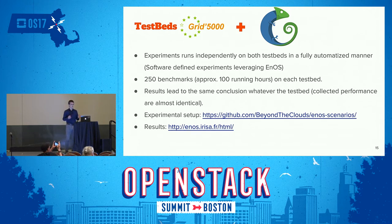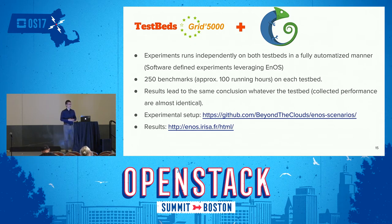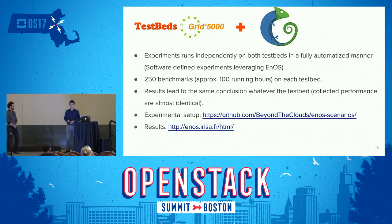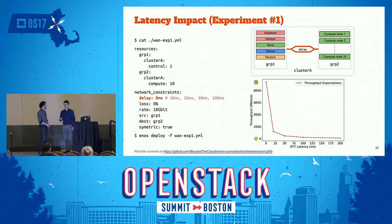Both testbeds — Grid5000 and Chameleon — were used to run the experiments for this presentation. The experiments are fully automated, defined as software, and ENOS runs them automatically. We ran around 250 benchmarks requiring about 100 hours to run — quite extensive. The results from both testbeds lead to the same conclusions and similar performance. You can access the scenarios and results from the GitHub URL on this slide.